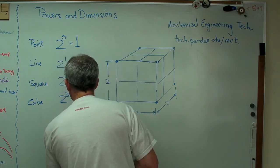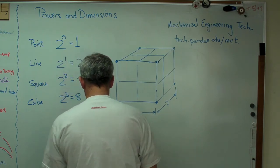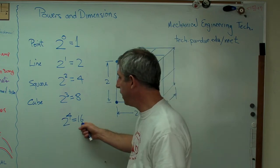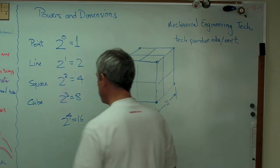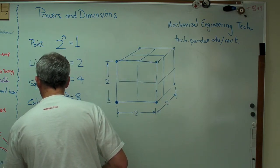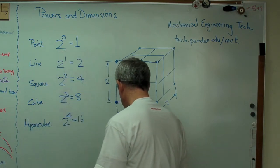Well, let's see. Two to the four is going to be 16, right? It's two, four, eight, sixteen. So it's sixteen whatevers. I'm not sure what that would be. And this gets called a hypercube. Okay, a hypercube.